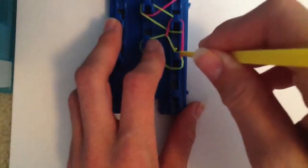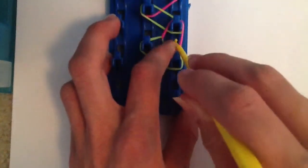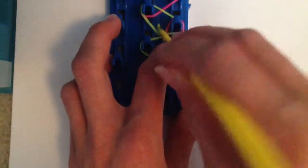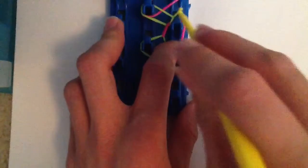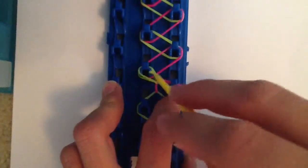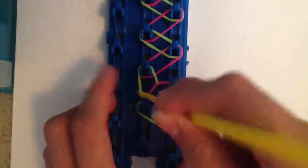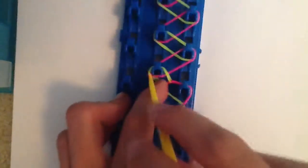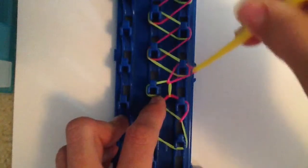And then you're going to pull back to grab that yellow band right there, that bottom band. Grab it and loop forward. And then go and pull back that yellow band and grab that pink band and hook it on itself.